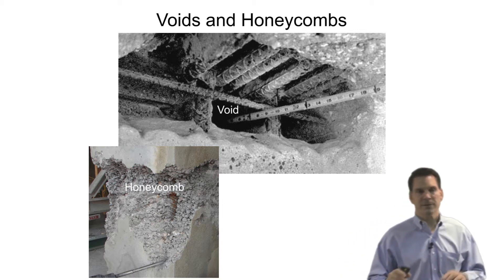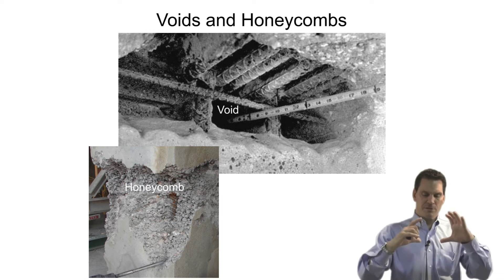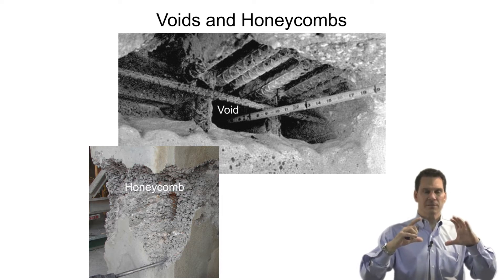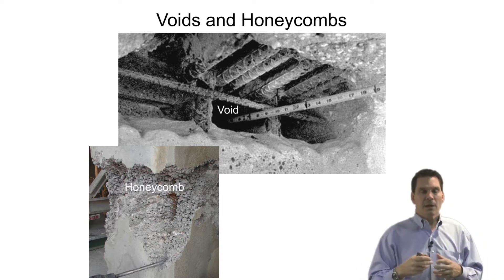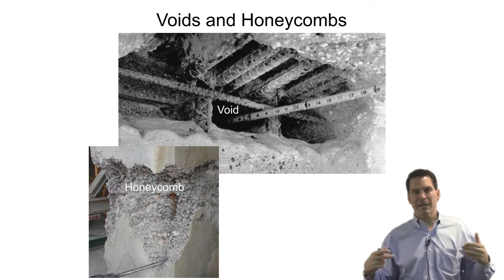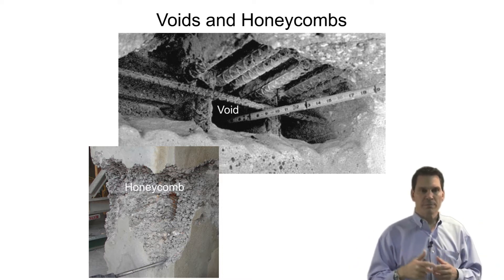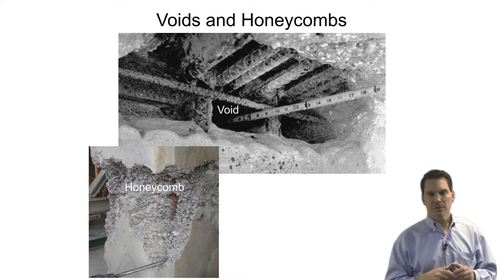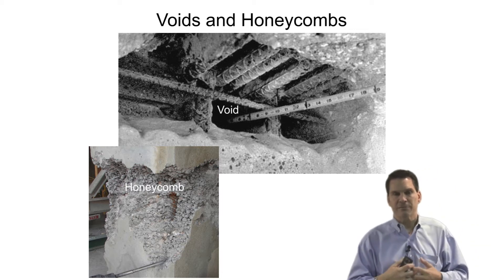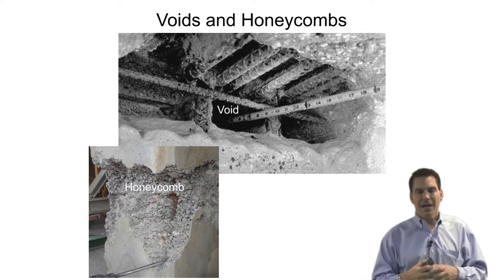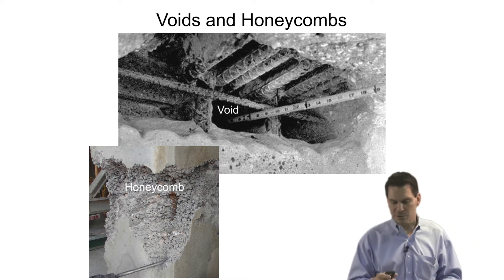The variables for fixing these scenarios depend on how big the void or honeycomb size is, how deep it is, access to it — how can I, if I have to repair them, get material into it — what are the rebar details, the cost (is it more expensive to tear it out versus fix it), and if we're going to fix it, what's going to be the quality assurance testing to make sure we've addressed it?